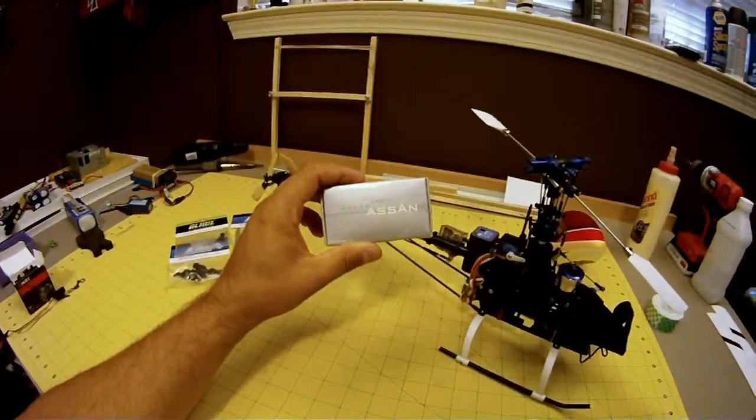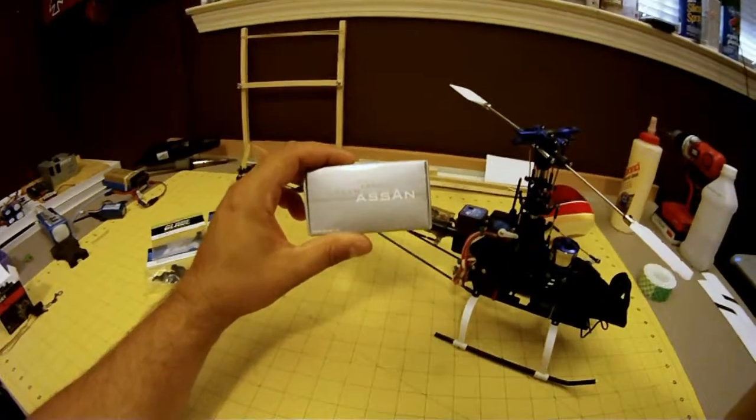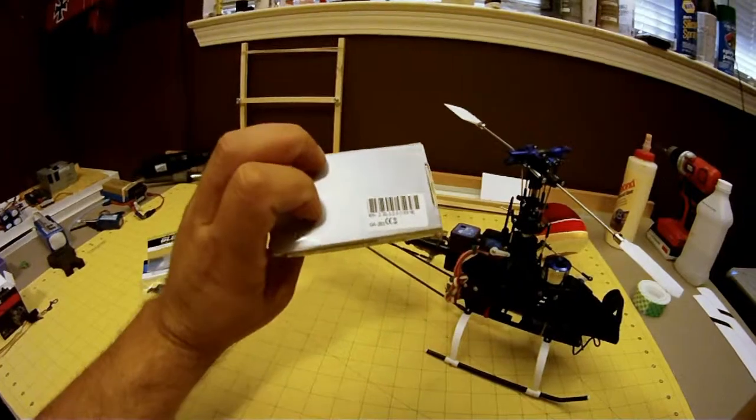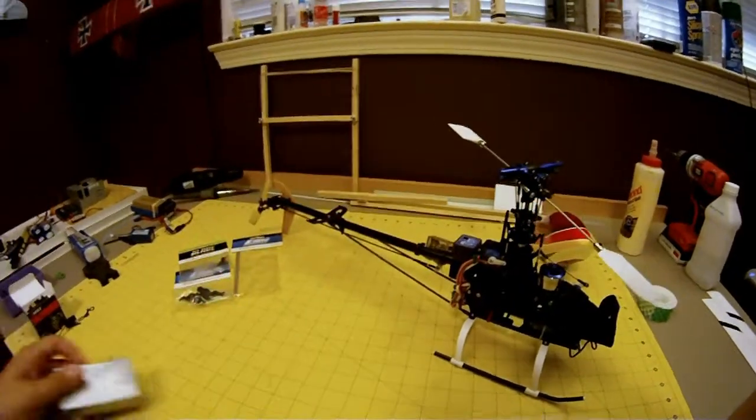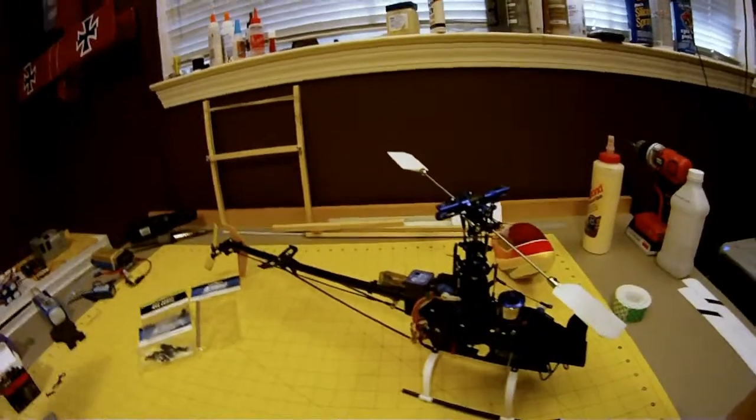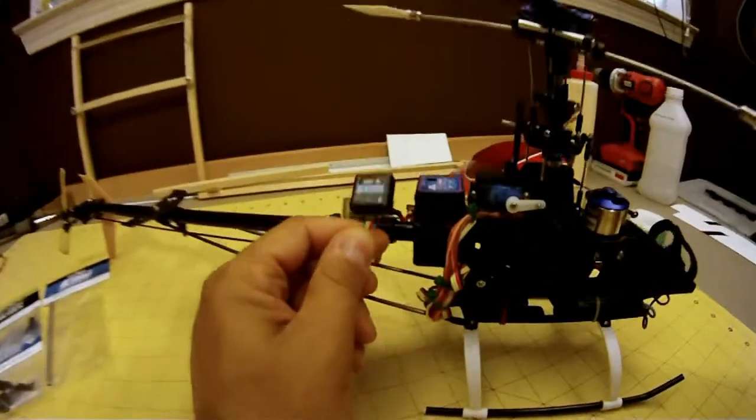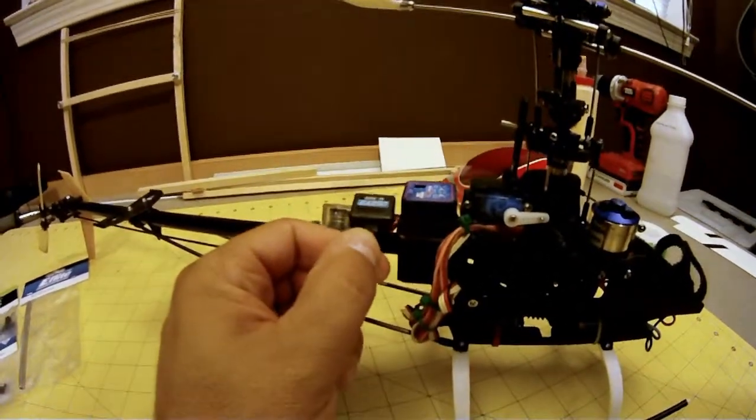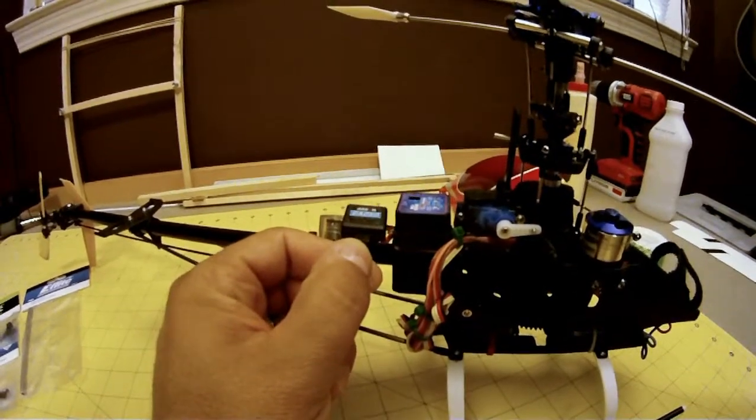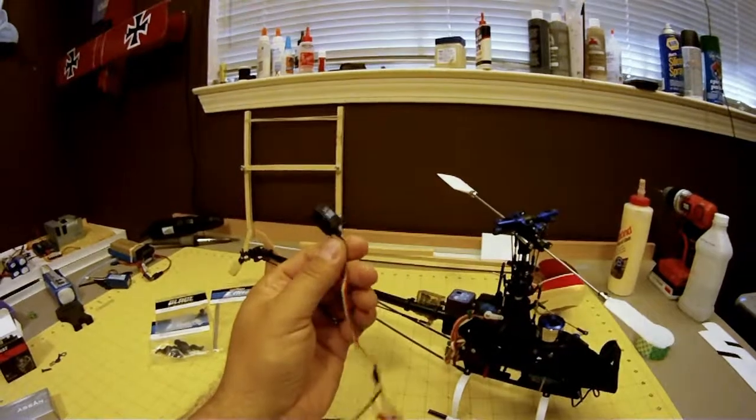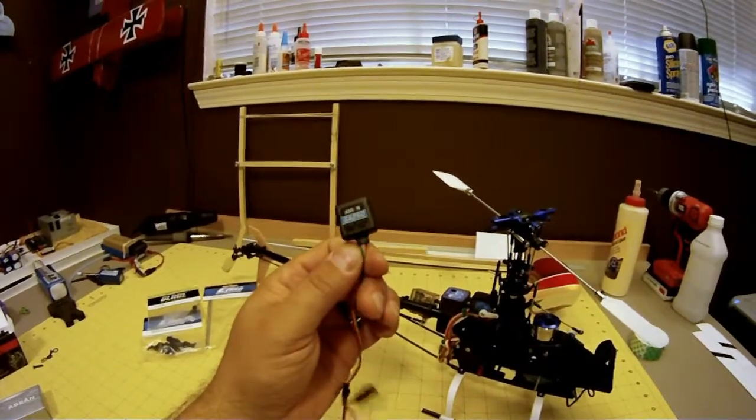I've got this ISAN MEMS gyro, it's a J250 MEMS gyro, very tiny little gyro. This is what it looks like compared to the Hobby King 401. It's a tiny little gyro. I'm interested to see how this little gyro works.